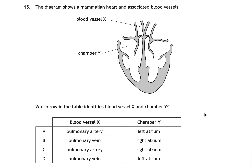Question fifteen shows a diagram of the heart with blood vessel X and chamber Y labelled, asking which row identifies them. The correct answer is C: blood vessel X is the pulmonary artery and chamber Y is the right atrium. X carries blood away from the heart towards the lungs, making it an artery in the pulmonary system. Y is an atrium — the upper chamber — and since the left and right are flipped in diagrams of the heart, it is the right atrium.